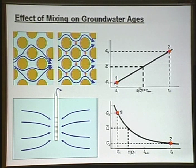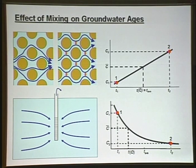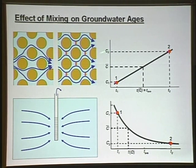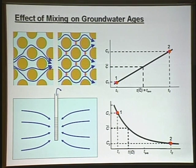What effect does that mixing have on the ages we measure? It depends on the input function of the tracers — how the concentration of that tracer changed in time. If we have a tracer that's linear with time, where concentration in rainfall increased linearly, and we mix two water samples of different ages in equal proportions, the mean concentration we measure gives us the mean age. It works nicely when the concentration-time relationship is linear.